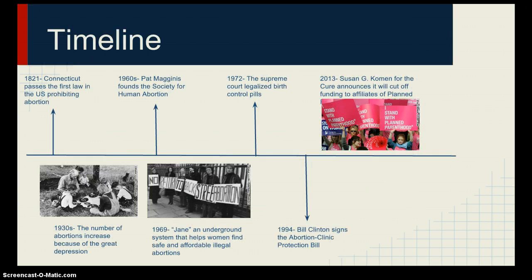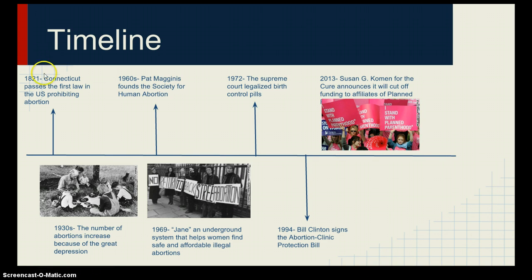This is a short timeline of how the laws of abortion have changed throughout the years. In 1821, Connecticut passed the first law in the United States that was prohibiting abortion. During the Depression in the 1830s, the number of abortions increased because of the poor economy.